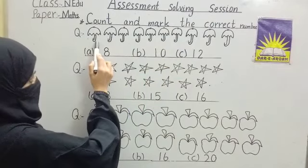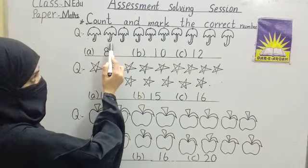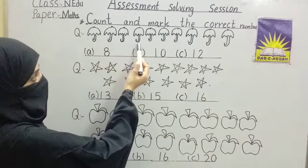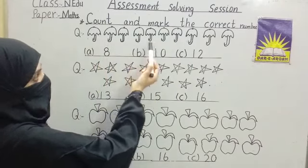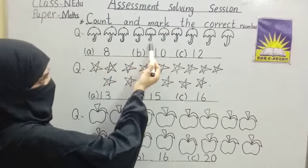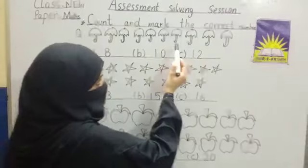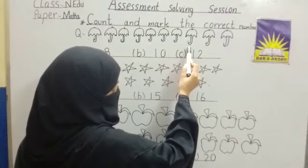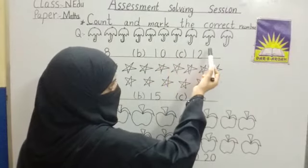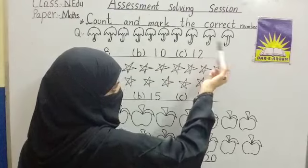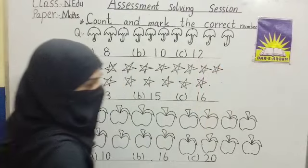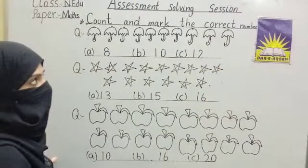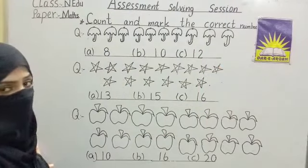One, two, three, four, five, six, seven, eight, nine, ten. How many umbrellas are there? Ten.